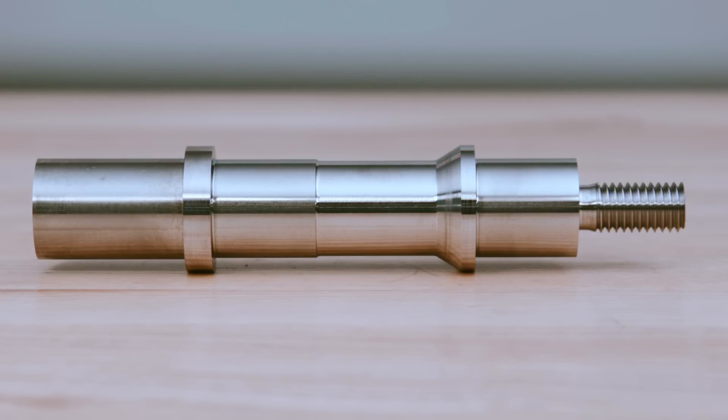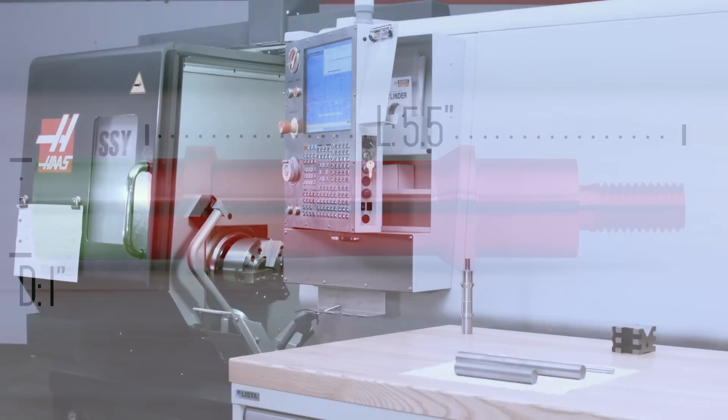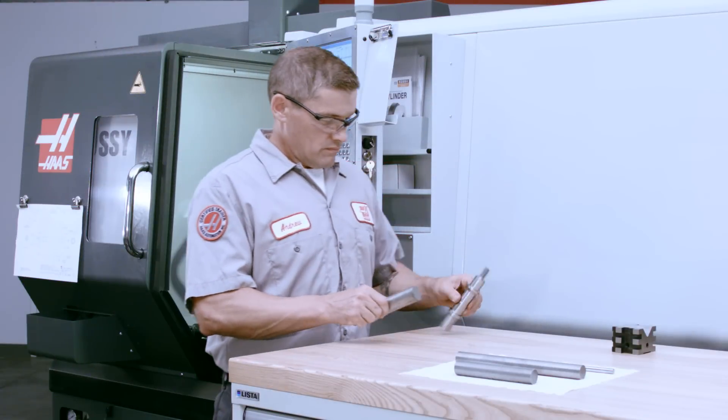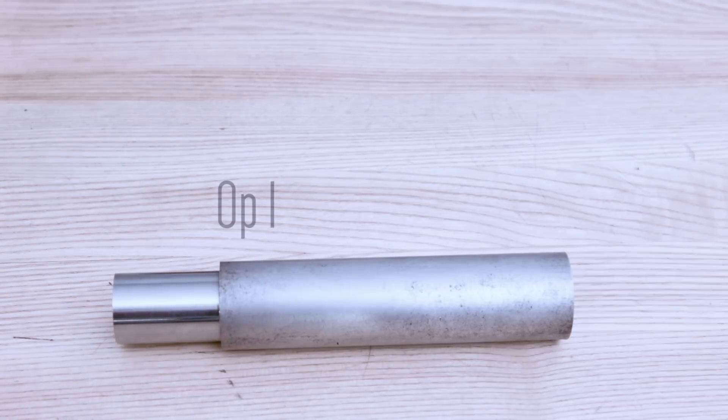This profiled and threaded shaft has an unsupported L to D that's beyond what is typically possible without a tailstock. Let's look at how you'd set up your tailstock for this part. Here's the material we'll be starting with. We already completed Op 1, where we turned the barstock down so we can grip it with our soft jaws.